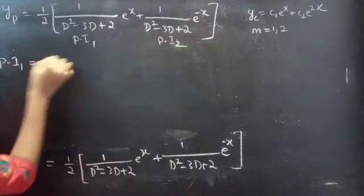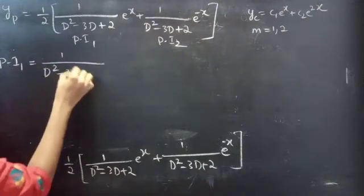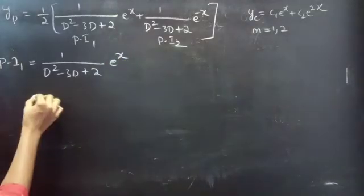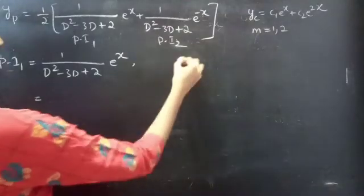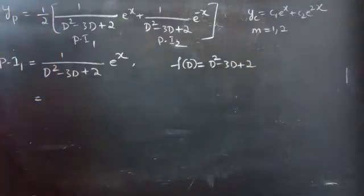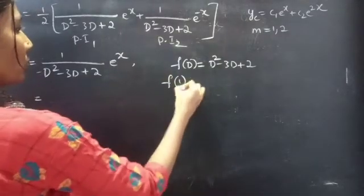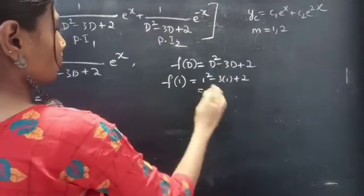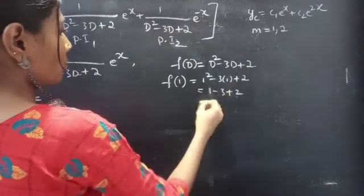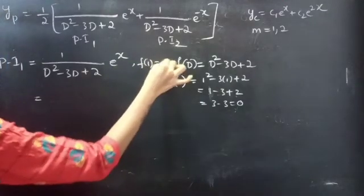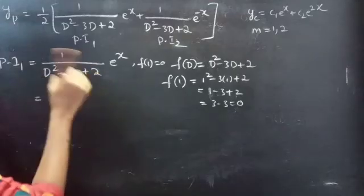For the first part: (1/(D² − 3D + 2))·e^x. We check whether f(1) = 0 or not. Putting d = 1: f(1) = 1² − 3(1) + 2 = 1 − 3 + 2 = 0. Since f(1) = 0, we cannot directly substitute d = 1.